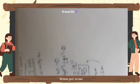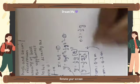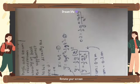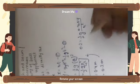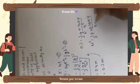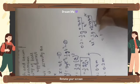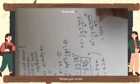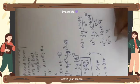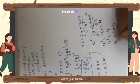Substituting into the trajectory equation: 0.2 = ½g × (0.4)² / u². Solving for u²: u² = ½ × 10 × 0.16 / 0.2 = 4, so u = √4 = 2. The answer is u = 2 meter per second.